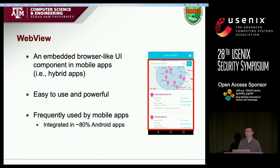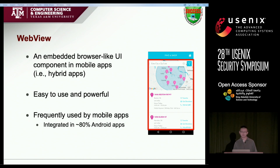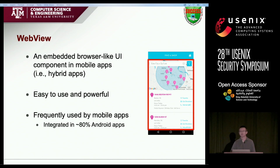So what is WebView, and why is the security research on WebView so important? WebView is an embedded browser-like UI component. WebView can be easily integrated in mobile apps to show web pages and run JavaScript code, but without leaving these applications. We usually call these applications hybrid apps. WebView is very easy to use, powerful, and popular. So if there is any security issue found in WebView, this security issue may have security impacts on mobile apps.